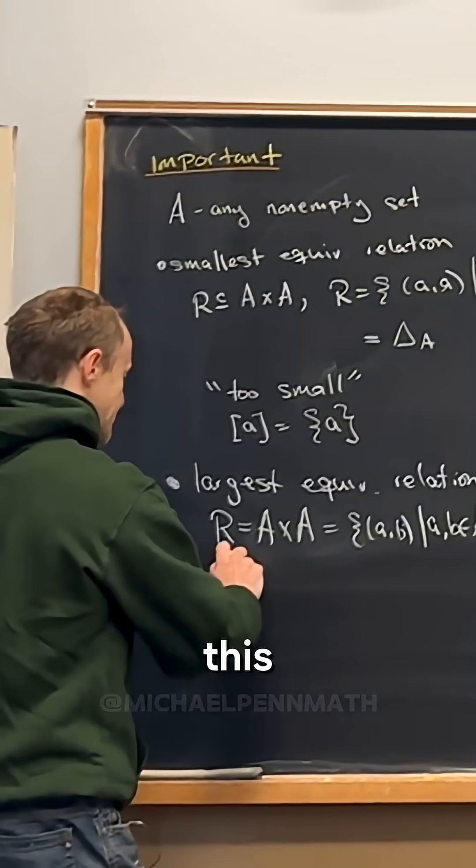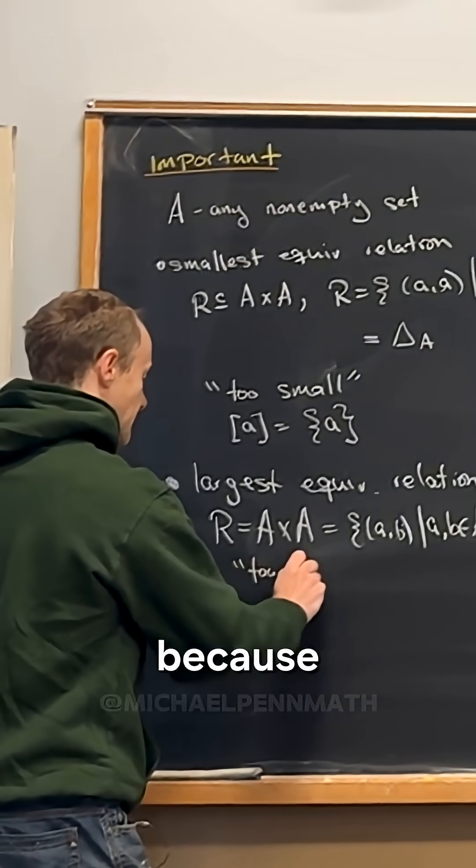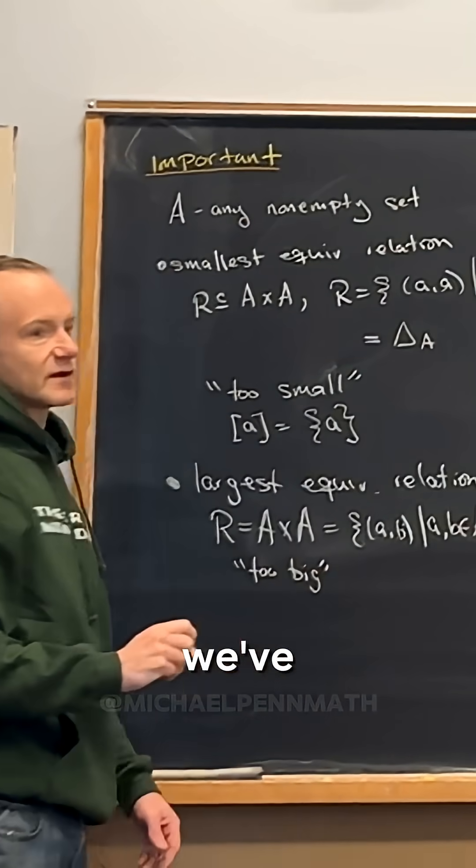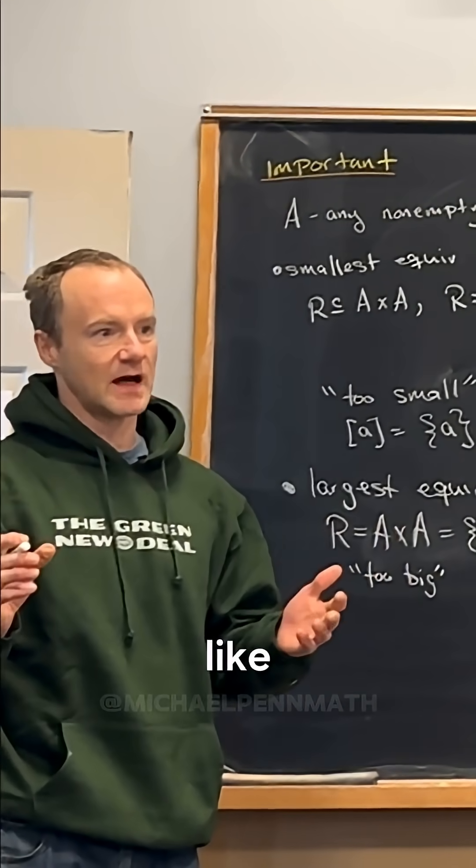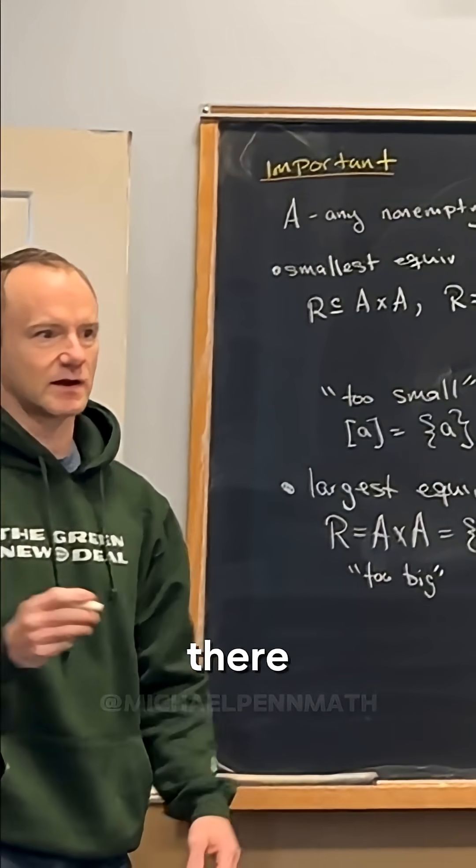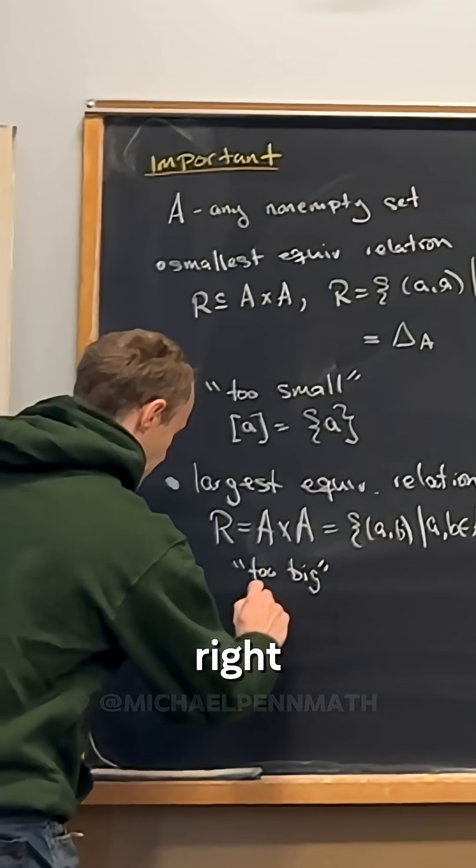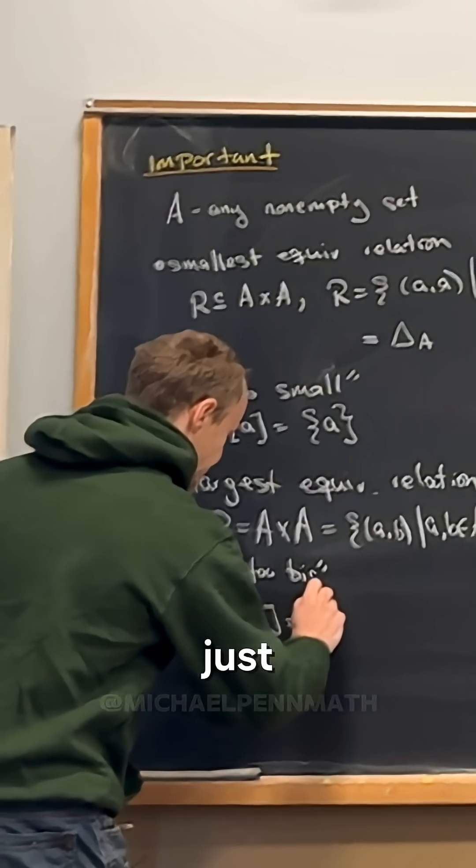So we want to think about this as being too big because in this case, we've chunked our set into chunks that are too big. Like how many equivalence classes are there? There's one equivalence class, and that equivalence class is just the whole set.